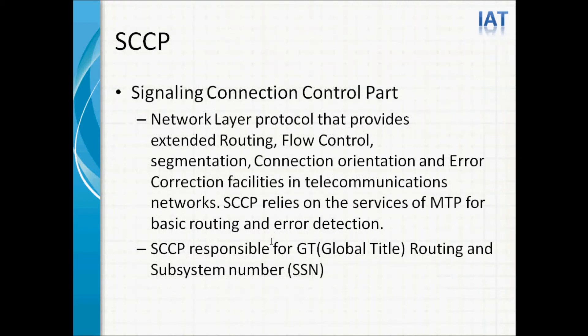SCCP — Signaling Connection Control Part — is the network layer protocol that provides extended routing, flow control, message segmentation, connection orientation, and error correction facilities in telecommunication networks. SCCP relies on the services of MTP for basic routing and error detection. SCCP is responsible for GT routing and the subsystem number. SCCP contains parameters which describe the type of address.